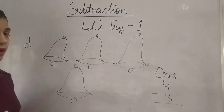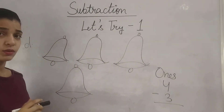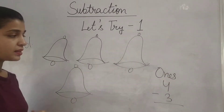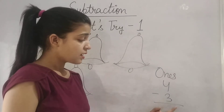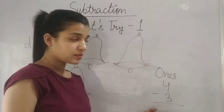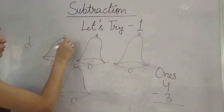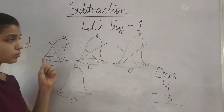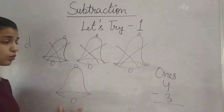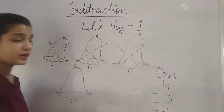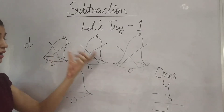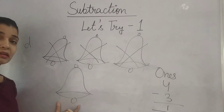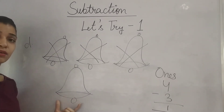Now come to the next part. There are some bells — you know what bells are, right? On Christmas we all use these bells. So you have some bells; this is the 1s column. You have to subtract 3 bells from 4. Start: 1, 2, 3. If we subtract 3 bells out of 4, how much do we get? Only 1. We had 4 bells and after subtracting 3 we have only 1 bell.